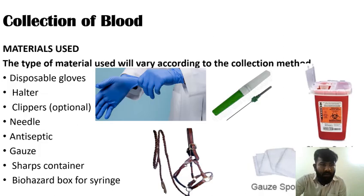Collection of Blood. Materials used will vary according to the collection method. Items include: disposable gloves, halter, clippers, needle, antiseptic, gauze, sharps container, and biohazard box for syringes.